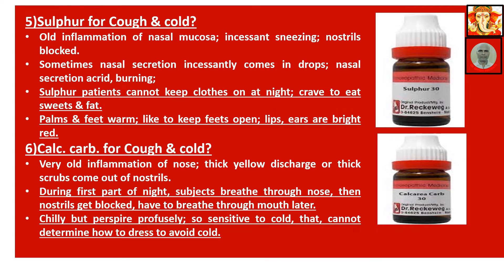Calcarea Carb for cough and cold: very old inflammation of the nose. Thick yellow discharge or thick crusts come out of the nostrils. During the first part of the night, the subject breathes through the nose, then nostrils get blocked and they have to breathe through the mouth later. Chilly but perspires profusely. So sensitive to cold that cannot determine how to dress to avoid cold.